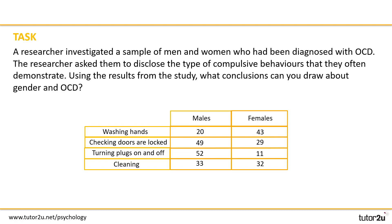Let's move on to a different skill now. This time you'll have a table of data to draw conclusions from. A researcher investigated a sample of men and women who have been diagnosed with OCD; the researcher asked them to disclose the type of compulsive behaviors that they often demonstrate. Using the results from the study, what conclusions can you draw about gender and OCD? Make sure that you draw conclusions and avoid merely regurgitating the data in the table. Pause the video for five minutes while you analyze the data.